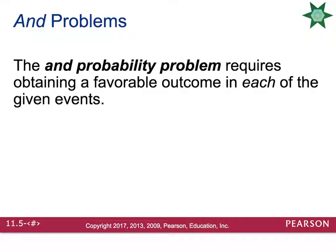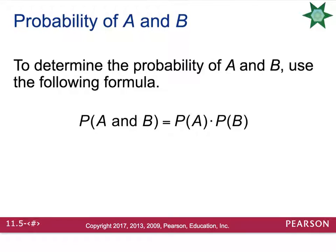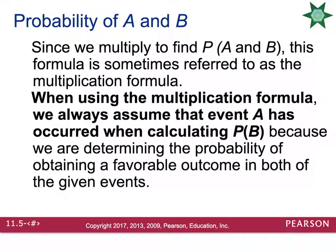The next type is AND probability. The AND probability problem requires a favorable outcome in both of the given events. To determine the probability of A and B, you multiply the probability of event A times the probability of event B. This is sometimes called the multiplication formula. When using it, always assume that event A has occurred when calculating event B, since we need a favorable outcome in both.